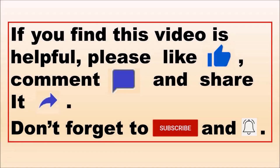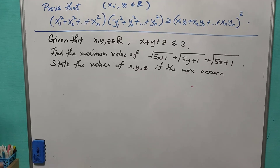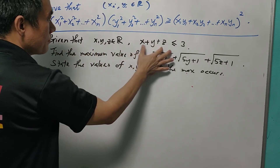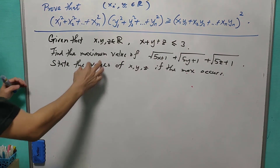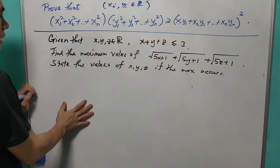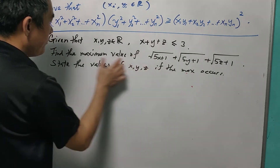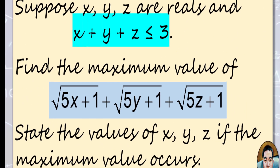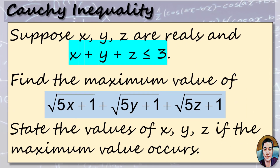If you enjoy this video, please like, comment, and subscribe. The first question we are going to discuss using the Cauchy inequality is: given that x, y, z are real numbers such that x + y + z ≤ 3, find the maximum value of √(5x+1) + √(5y+1) + √(5z+1), and state the values of x, y, z when the maximum occurs. Please try before looking at the answer.